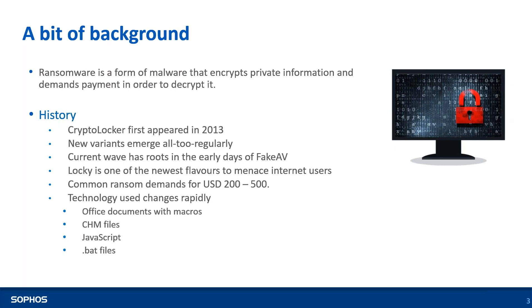Going into the history of ransomware — 2013 was the year when CryptoLocker first appeared, and then new variants kept on coming. The current route in the early days was in the form of fake AV, where you open your Windows and get a screen which talks about a potential virus on your node, and you need to download a fake AV in order to clear that virus or malware.